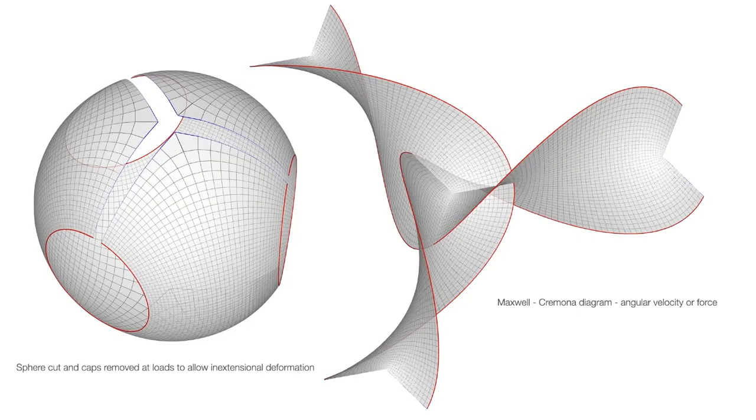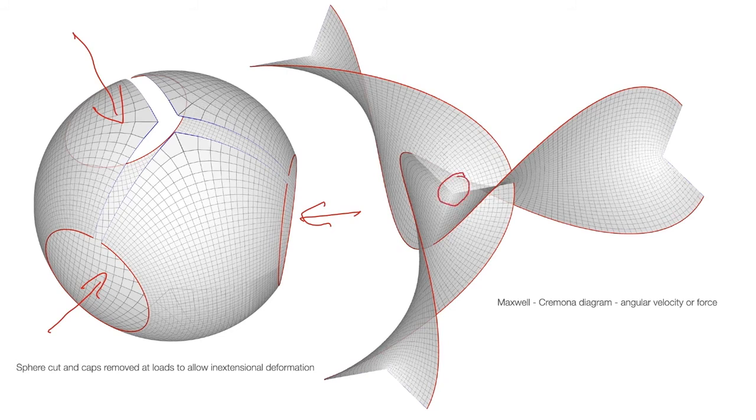If we have three point loads on the sphere, so there's one load here, one load here, one load here, then the Maxwell-Cremona diagram becomes more interesting. It's still a minimal surface. The Maxwell-Cremona diagram is always a minimal surface for a sphere loaded with point loads. In this case, we have effectively three branches which meet at this point; the surfaces intersect at this point. And at that point the curvatures of the surfaces is infinite, and that corresponds to this point on the sphere where the stress is zero.